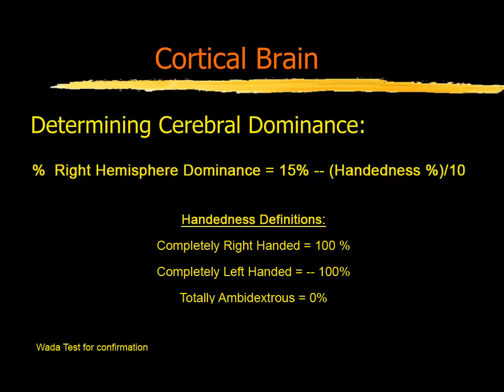The formula shows that the percentage of people with right hemisphere dominance is equal to 15% minus the handedness of that person divided by 10. So if you're completely right-handed, that would be 100 divided by 10, which equals 10, or 15 minus 10, or about 5% will be right dominant. Whereas totally left-handed people have a handedness of negative 100, and so negative 100 over 10 is negative 10, and 15 minus negative 10 equals 25%. So it works out pretty well mathematically.